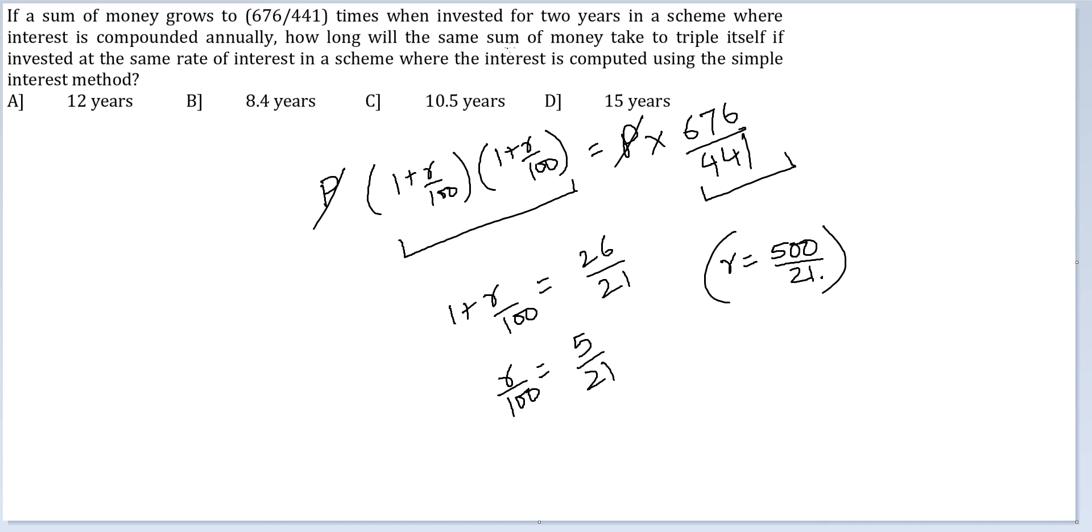In how long will the same sum of money take to triple itself if invested at the same rate of interest in a scheme where the interest is computed using simple interest method? The rate is this. The amount has to triple itself, so the interest has to be double the principle.